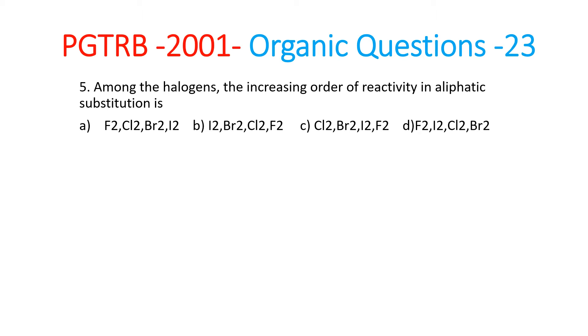The fifth question is: Among the halogens, the increasing order of reactivity in aliphatic substitution is. Four options are there, all the halogens are listed over here. So we need to see which one is more reactive.